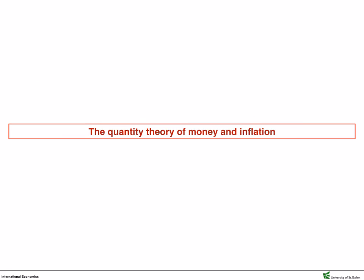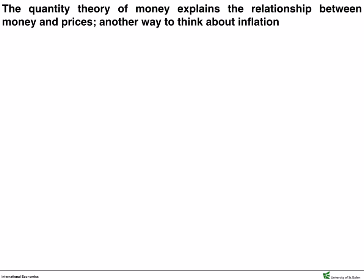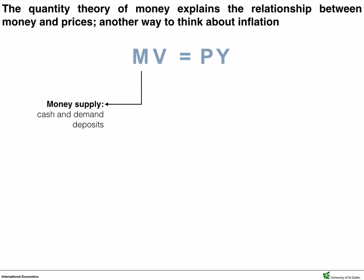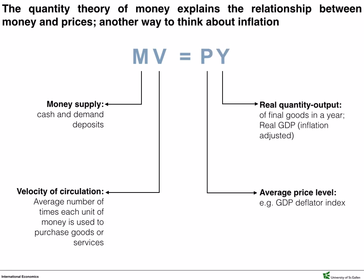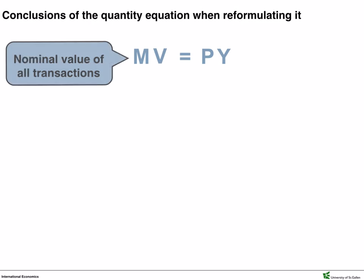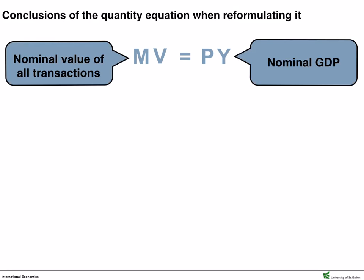To show how the quantity theory of money affects inflation, let's take a closer look at it. During classical economic thinking, the Yale economist Irving Fisher formalized the quantity equation MV equals PY. M stands for cash and demand deposits. V stands for velocity of circulation, or how many times a unit of money is used to buy final goods or services. P stands for the average price level, and Y represents the real quantity output of goods or services in a period. MV equals the nominal value of all transactions over a period, and PY equals nominal GDP over that period.